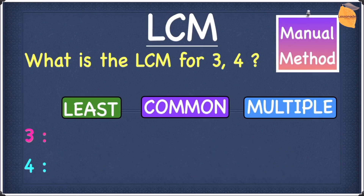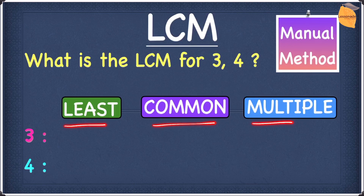Let's look at this example. The example we have right here is: what is the LCM for three and four? LCM stands for least common multiple, and we're going to find the LCM using the manual method.